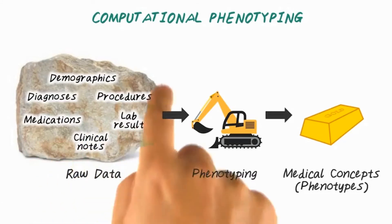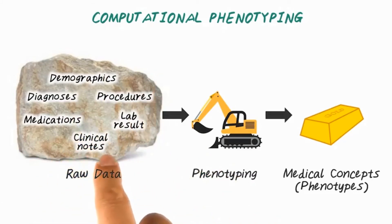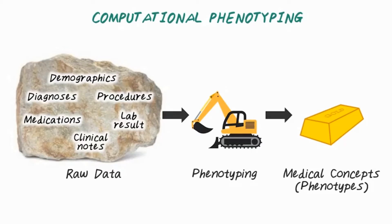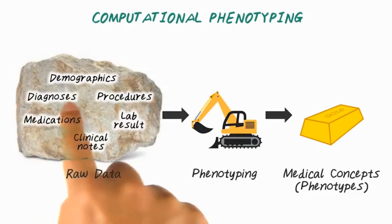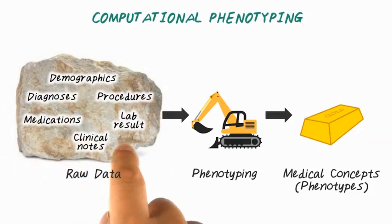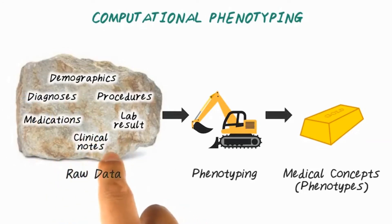There are many reasons why phenotypes are not represented consistently or reliably in the raw data. First, the data are noisy — there are missing data and raw information in the raw data. Second, the main usage of this data is to support clinical operations, such as billing, and it's not designed directly for supporting research. Third, there are many overlapping and redundant pieces of information. For example, diagnosis information can be found in the structured field corresponding to diagnosis codes, but the same information can also be present as unstructured information in the clinical notes.